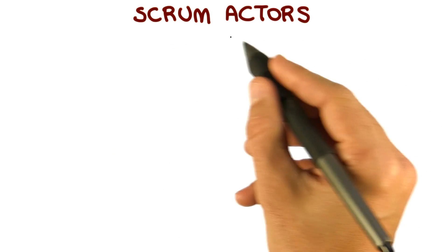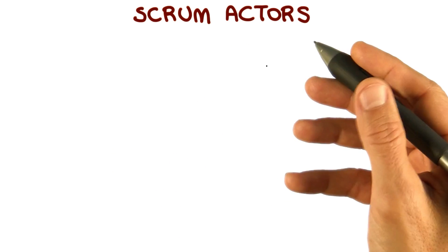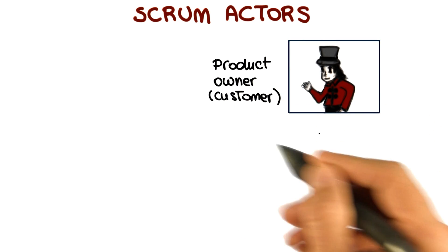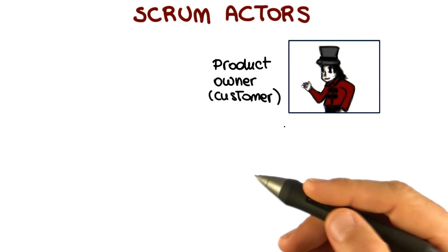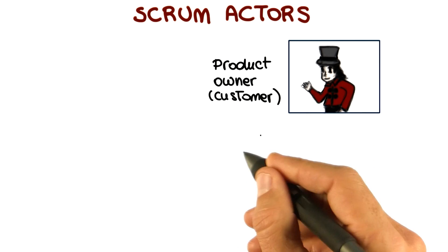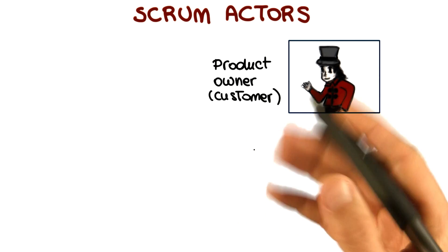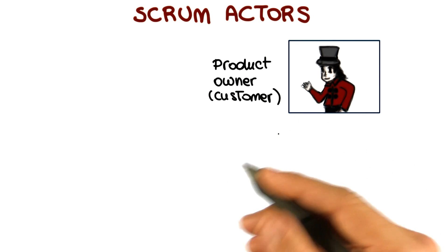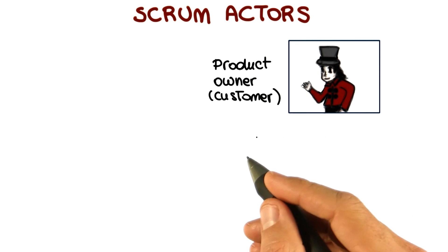I'm going to start by discussing who the Scrum actors are. There are three main kinds of actors. The first one is the product owner, which means the customer. The product owner is mainly responsible for the product backlog, where the product backlog is basically the list of things that have to be done for the project. That is analogous to the user stories to be realized in XP that we just saw.